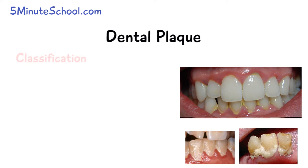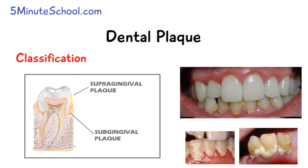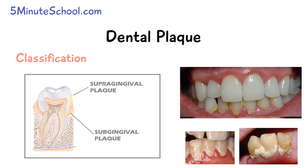Dental plaque is classified according to its location. If the plaque is located above the gum line, it is considered to be supra-gingival plaque. If it is below the gum line, it is sub-gingival plaque.